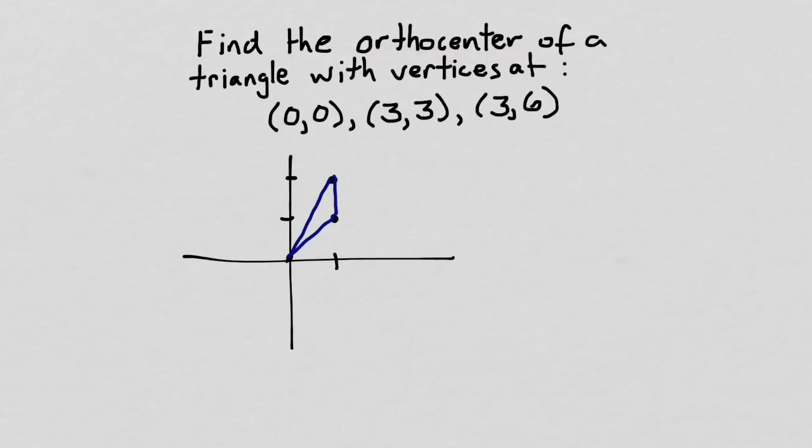The orthocenter is where the altitudes meet. So to find the orthocenter, we can draw an altitude from at least two of the vertices, and where they cross, that's where the orthocenter is.